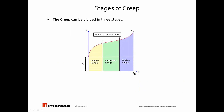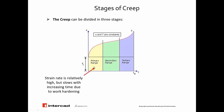Now let's look at the stages of creep. Looking at this graph which expresses strain as a function of time at constant temperature and stress, you can see the first stage is the primary range, where the strain rate is relatively high and the slope is steep. Then it slows down as the material gets surface hardening. You put stress on the material, it stretches rapidly, then slows down and comes to the second stage, where the strain rate eventually reaches a minimum variation and becomes nearly constant.